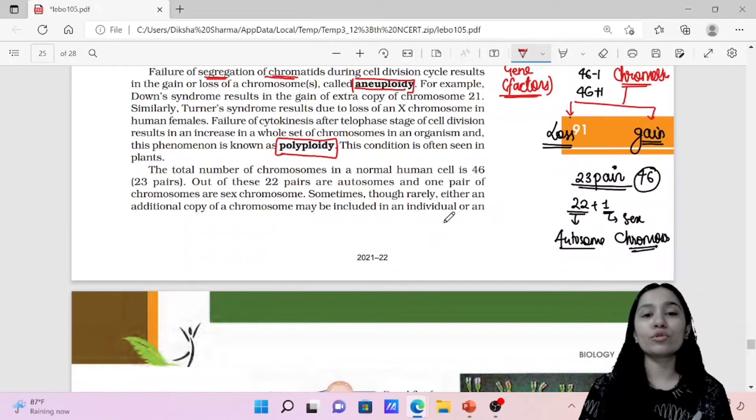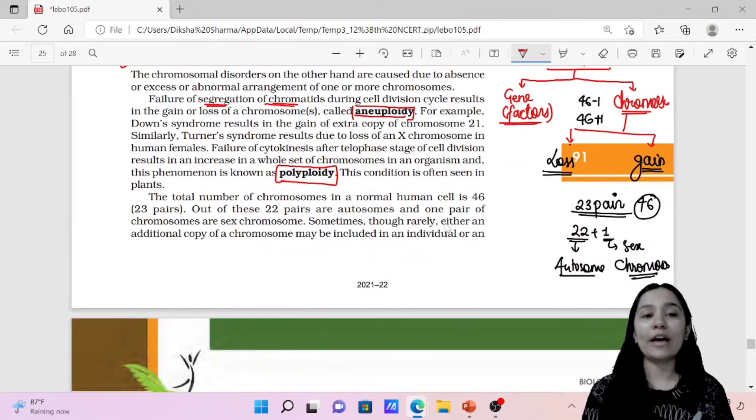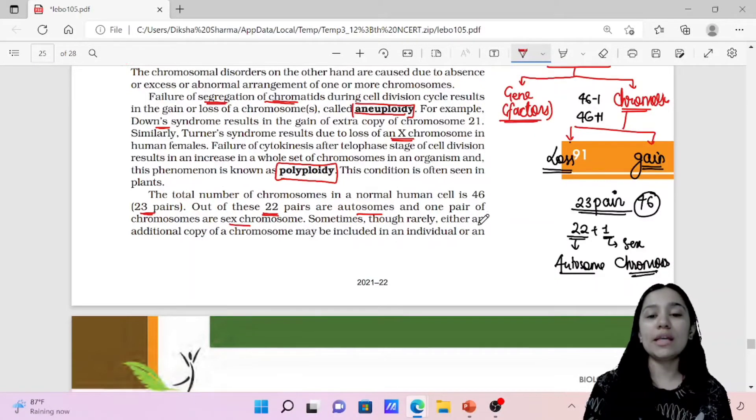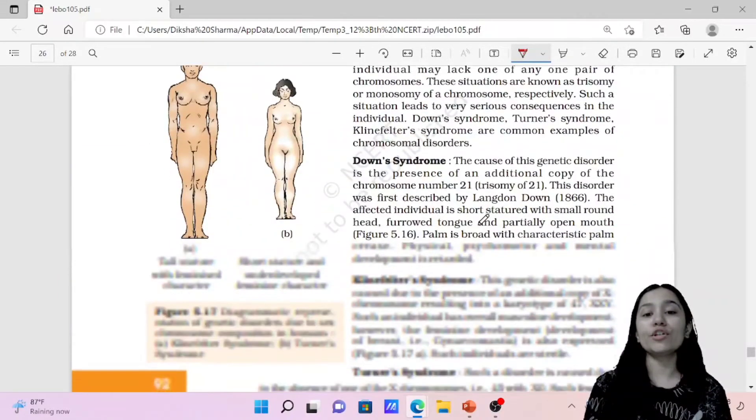We will discuss different types of chromosomal disorder in brief. I will tell you an example of Down syndrome and then Turner syndrome. There is one condition called aneuploidy which is loss of chromosome, then we have a condition called polyploidy which is gain of chromosome. Humans have 23 pairs of chromosome, 22 pairs are of autosomes and one pair is sex chromosome.